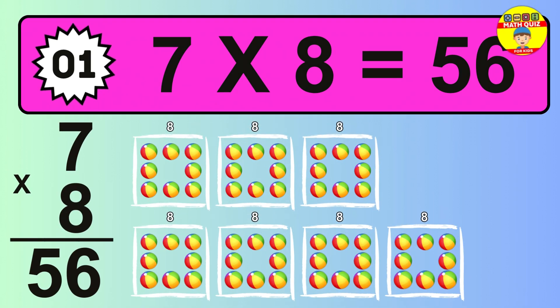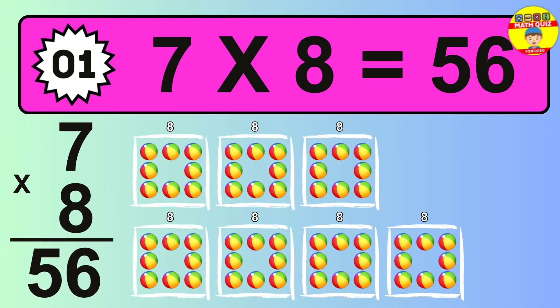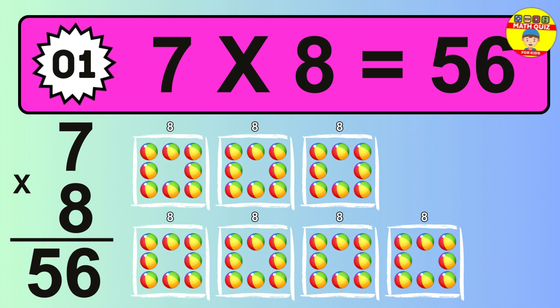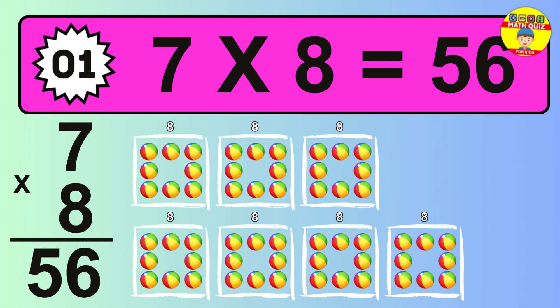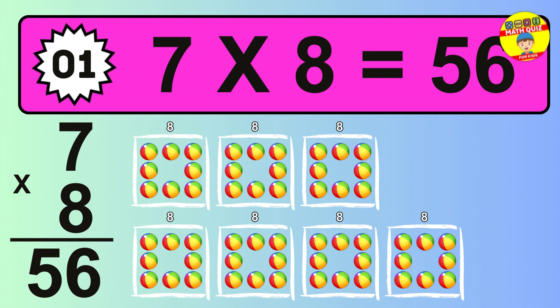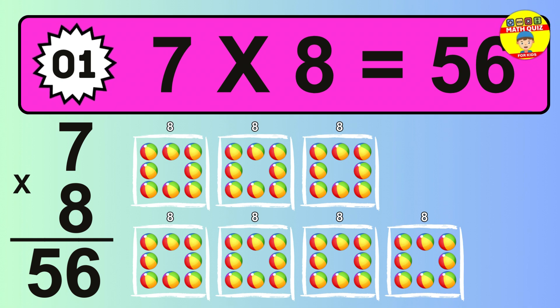The answer is 7 times 8 is 56. To calculate, we have 7 groups with 8 balls each one. So, how many balls do we have? 56 balls.